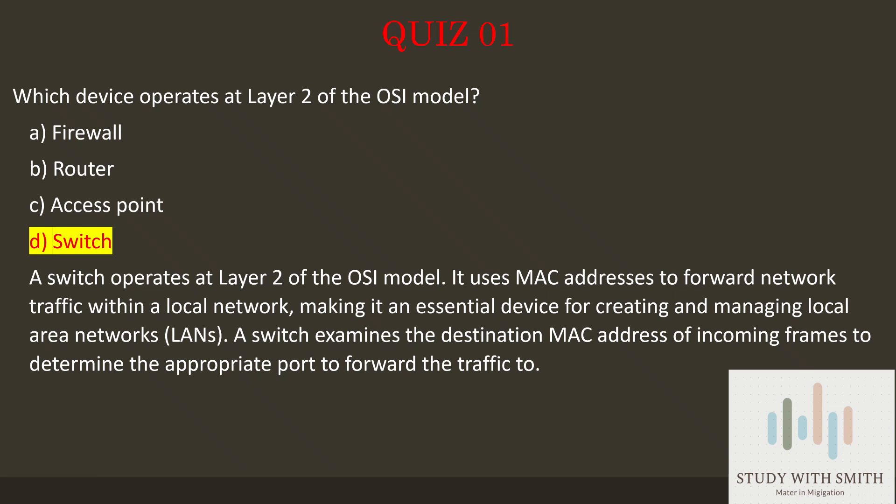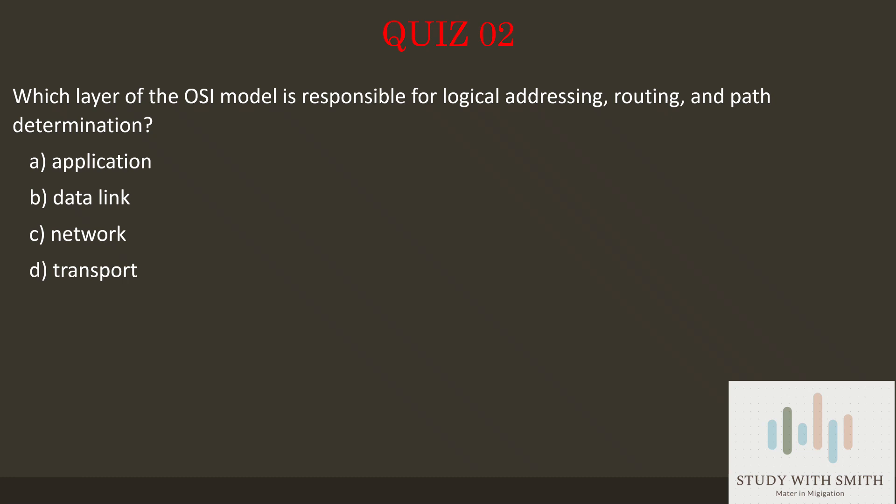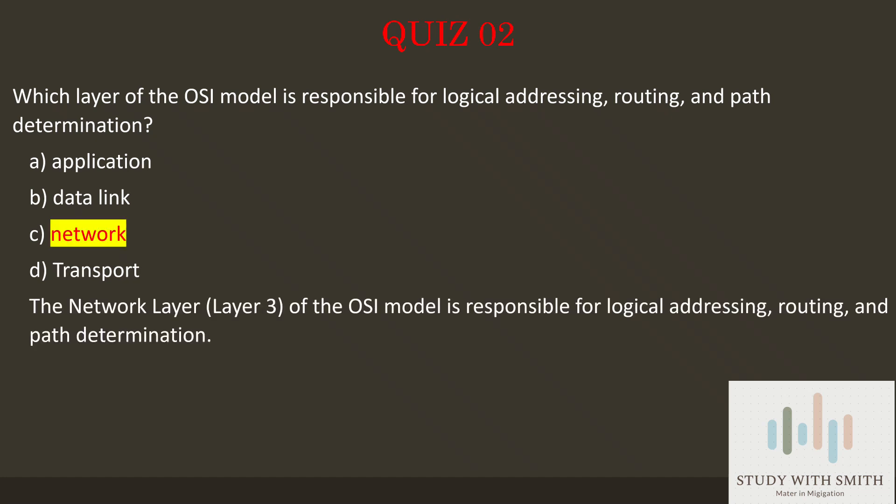Question 2: Which layer of the OSI model is responsible for logical addressing, routing, and path determination? Pause the video now to select the best answer. The answer is C — Network layer. The network layer, Layer 3, of the OSI model is responsible for logical addressing, routing, and path determination.